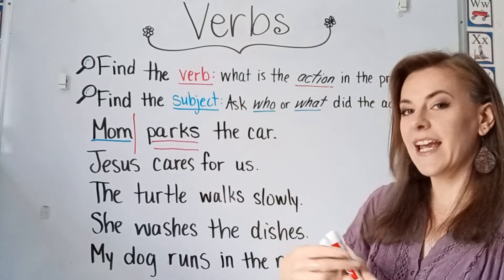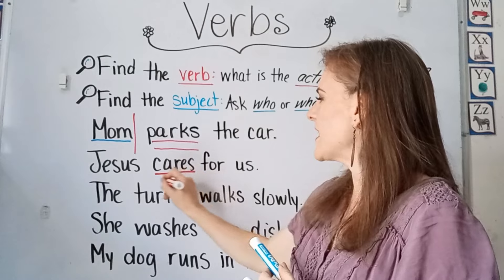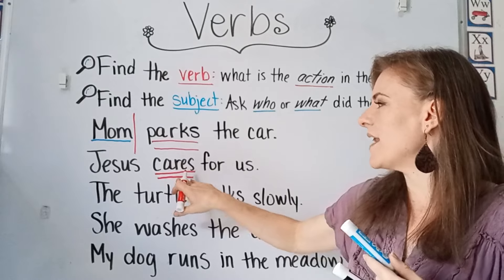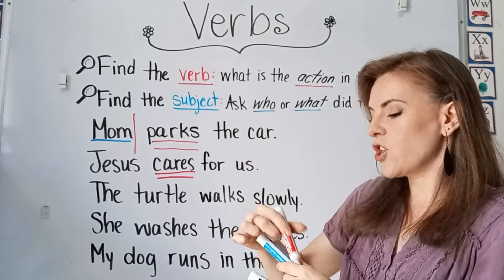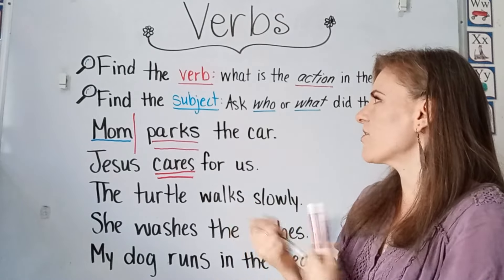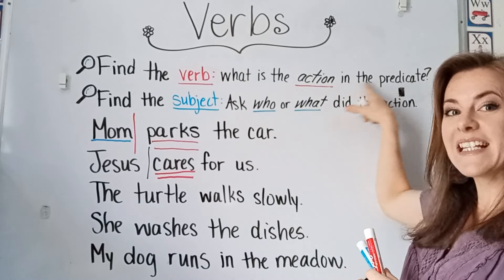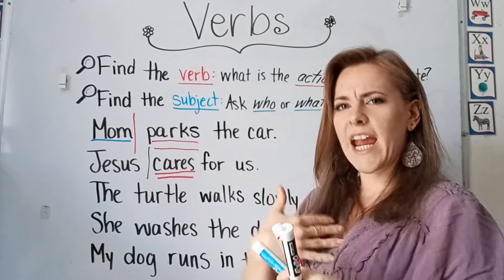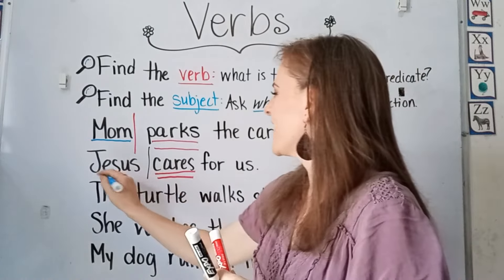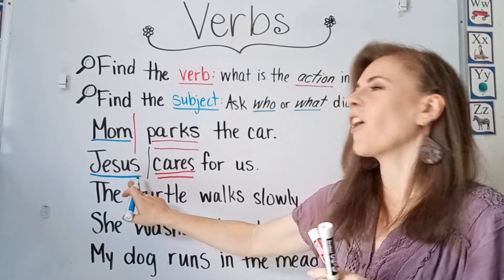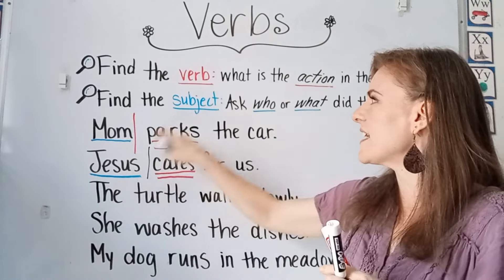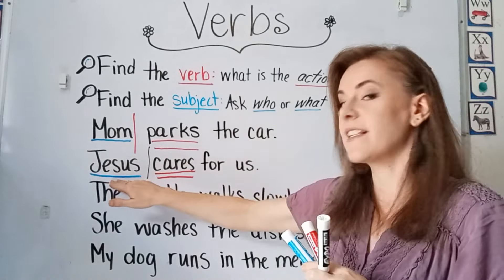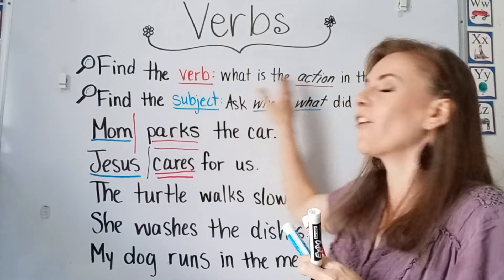Jesus cares for us. Cares is the action being done. This is an action you don't see — you just know it's being done. It's still an action. Cares is our verb; it's the action being done in the predicate part of our sentence. And who or what cares for us? Well, Jesus. So Jesus is our subject and cares is our verb. The subject is in the subject part of the sentence and our verb is in the predicate.